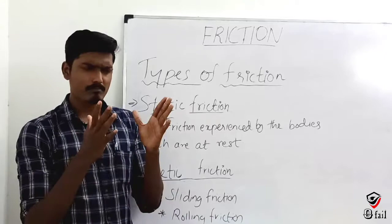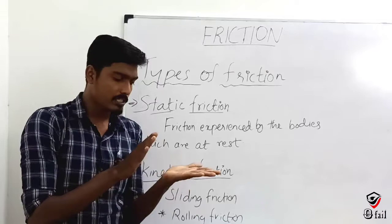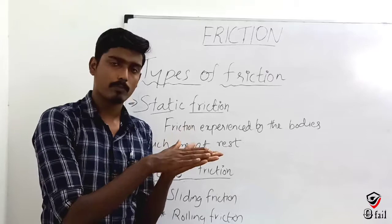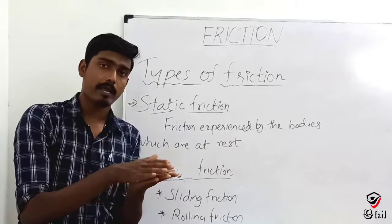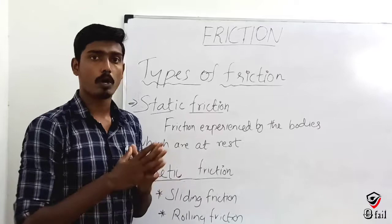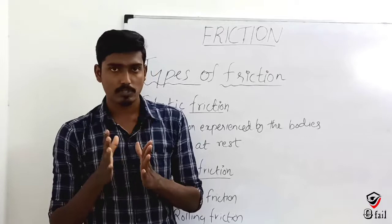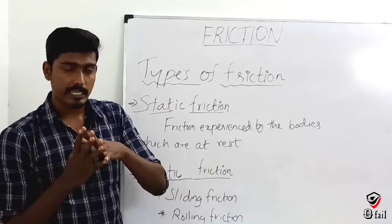Let's try an experiment. There is a table — now we push it and it moves. Now we use pencils — we arrange the pencils under the table and move it again. We will move the table over the pencils and it moves smoothly. If you have pencils under the table, the pencils will roll. So the second case creates rolling friction.